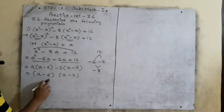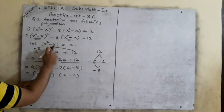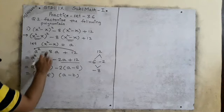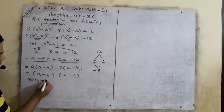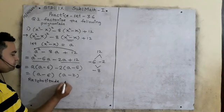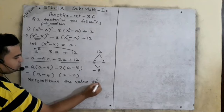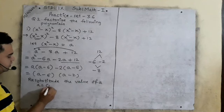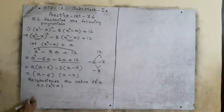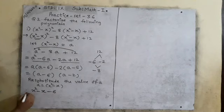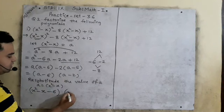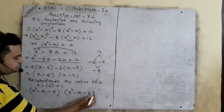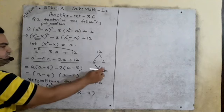Now we will resubstitute the value of a. We had considered x squared minus x equals a, so we will write again: therefore, the first bracket is x squared minus x minus 6, and the second bracket is x squared minus x minus 2. So here we will find the factorization like this. Then we will factorize each bracket.